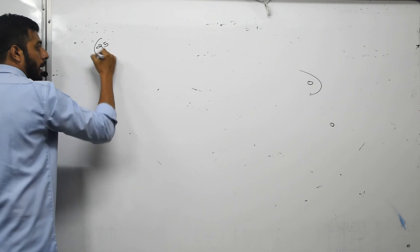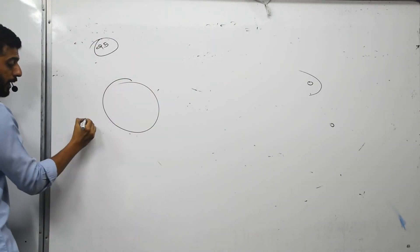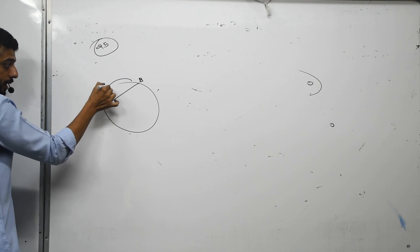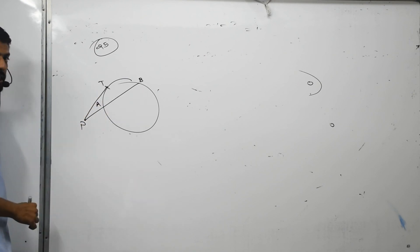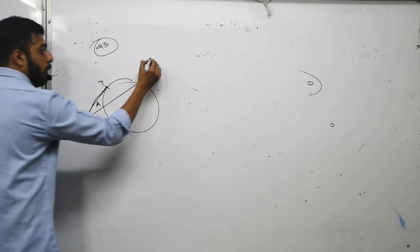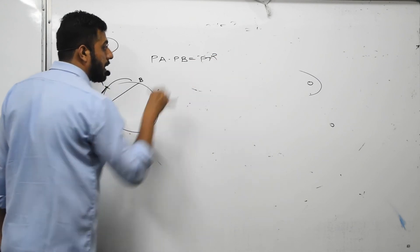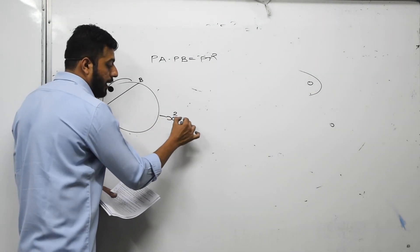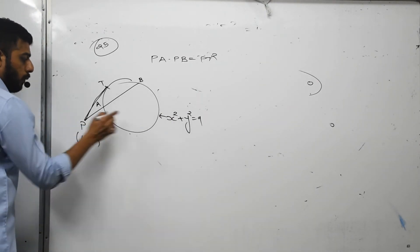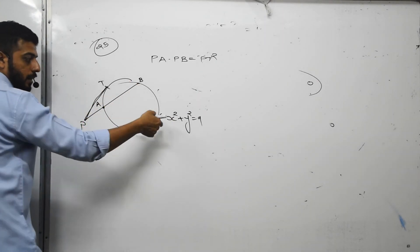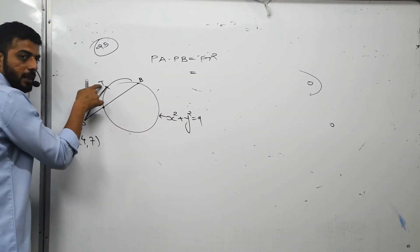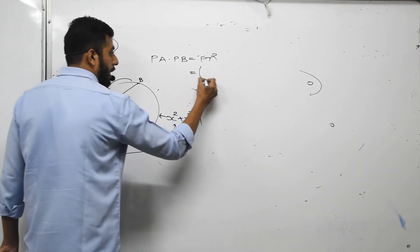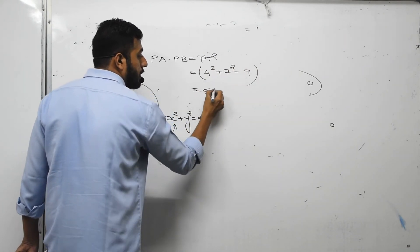Question number 25. If a point is outside a circle and a line through it intersects the circle at A and B, and PT is the tangent length, then PA times PB equals PT squared. Here, point P is (4, 7) and the circle is x squared plus y squared equals 9. We need PA times PB, which equals PT squared. Substituting coordinates: 4 squared plus 7 squared minus 9 equals 16 plus 49 minus 9 equals 56.